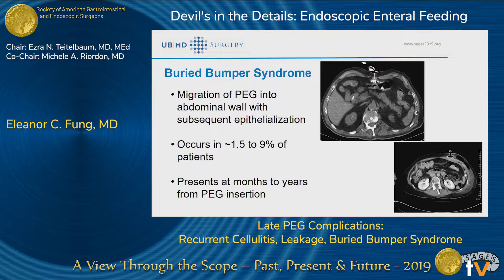The last complication I'll be talking about today is buried bumper syndrome. This is when the PEG tube migrates into the abdominal wall with subsequent epithelialization. It occurs somewhere between 1.5% to 9%. On these CT scans you can see how it usually presents — the PEG tube is in various locations outside of the stomach, either in between the layers of the stomach, outside, or in the anterior abdominal wall. This is usually a later complication once a mature tract is formed, presenting typically between months to years — it can occur as early as three weeks, but the median is about 18 months from PEG tube insertion.